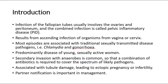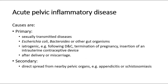First we look at acute PID. The causes can be divided into primary and secondary. Primary causes are sexually transmitted diseases, Escherichia coli, bacteroides, or other gut organisms. Iatrogenic causes include following dilatation and curettage, termination of pregnancy, insertion of an intrauterine contraceptive device, or after delivery or miscarriage.